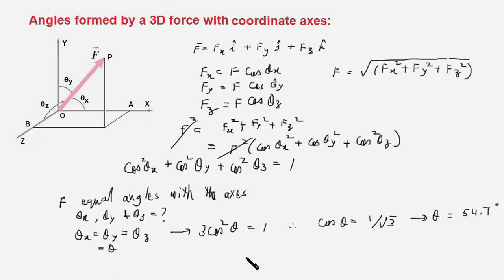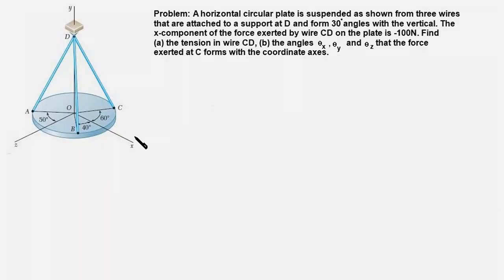Having covered these basic concepts, let us work out a problem. We have a circular plate supported in a horizontal position by three wires connected to the plate at points A, B, and C. The x-component of the force exerted by wire CD onto the plate is given as −100 N, and we must find the tension in wire CD and the angles this force makes with the three axes.